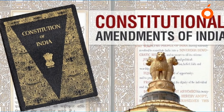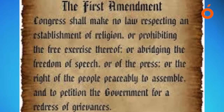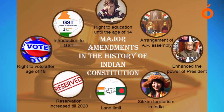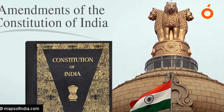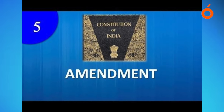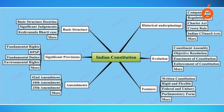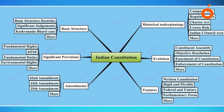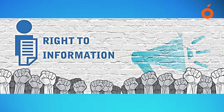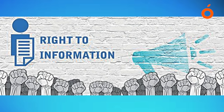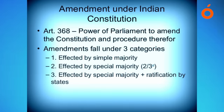Article 368 of the constitution deals with the powers of parliament to amend the constitution and its procedure. It states that the parliament may, by exercise of its constituent power, amend by way of addition, variation, or repeal any provision of the constitution in accordance with the procedure laid down. However, the parliament cannot amend those provisions which form the basic structure of the constitution.